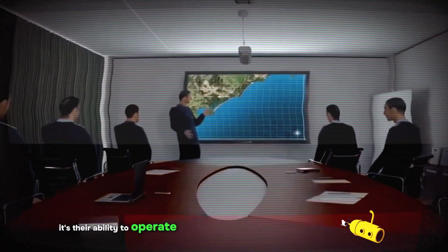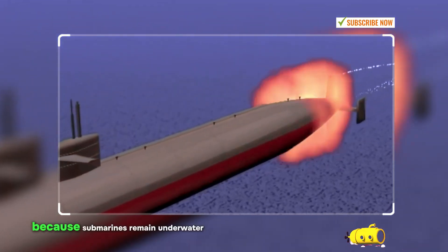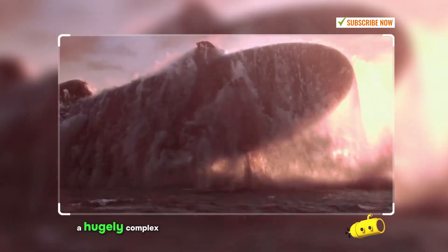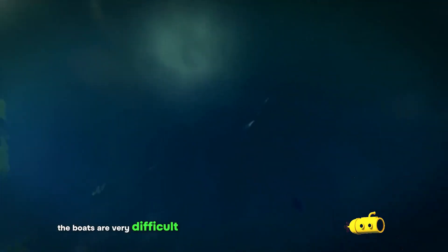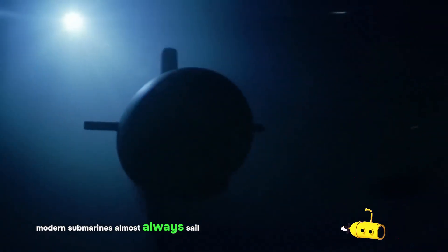It's their ability to operate covertly that allows submarines to do those things. Because submarines remain underwater and because the oceans are a hugely complex and dynamic environment, the boats are very difficult to detect and almost as difficult to track once detected.